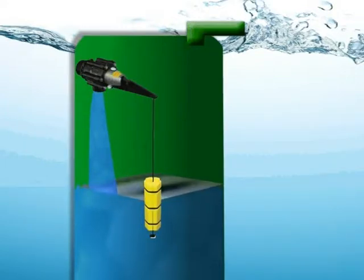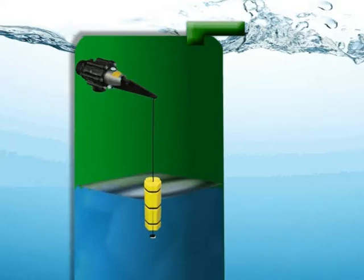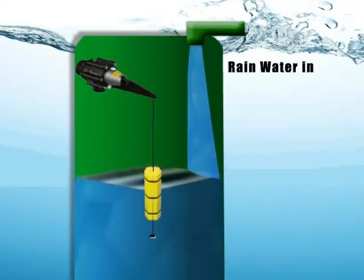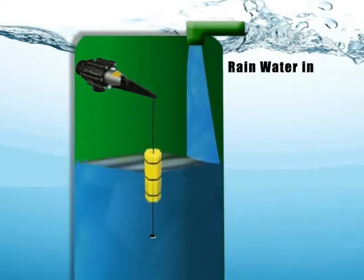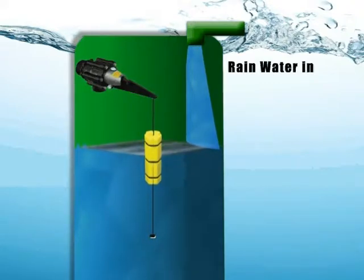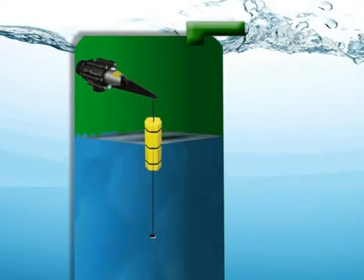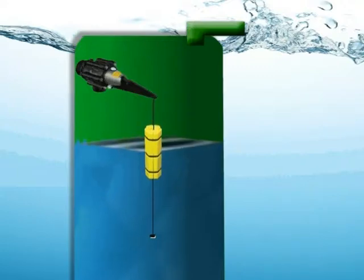As the tank empties, the weighted float travels down the cord and sits on the bottom stop to activate the valve. The valve will run until the weighted float lifts clear of the bottom stop. The float will then rise as rainwater fills the tank and falls as the tank water is used.